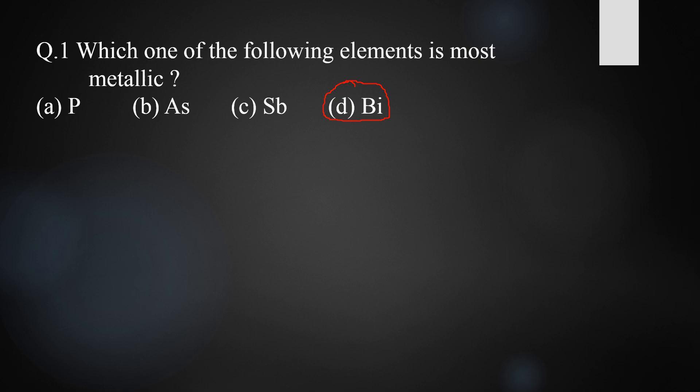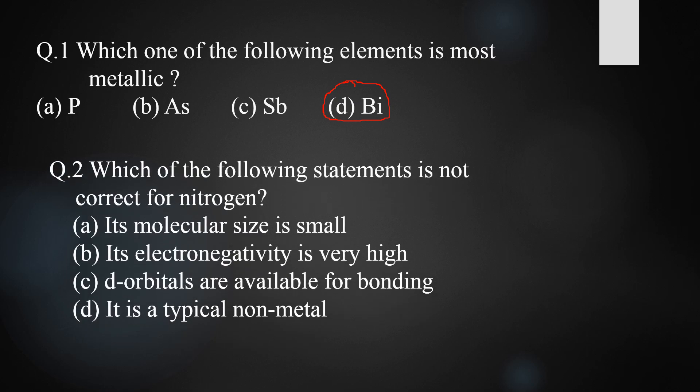Question two: which of the following statements is not correct for nitrogen? The options are: its molecular size is small, its electronegativity is very high, d-block orbitals are available for bonding, and it is a typical non-metal. The question asks which statement is not correct.